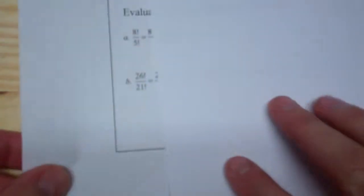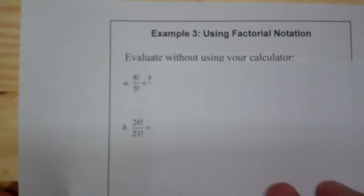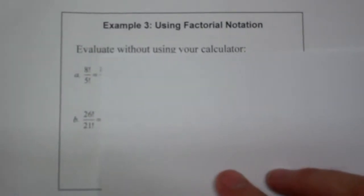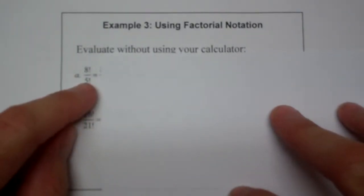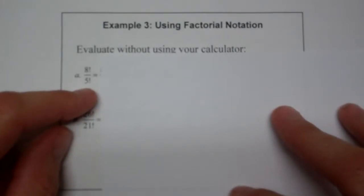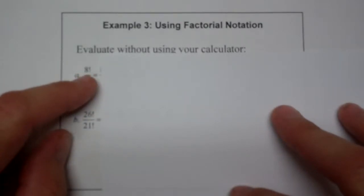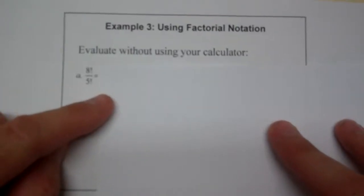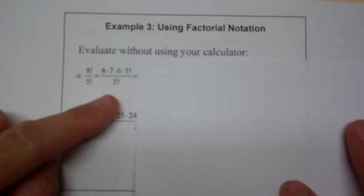Now that brings us to some use with the factorial notation. This is going to be really helpful. Sorry, I forgot to delete it. This is going to be really helpful in the future. Now your calculator can handle 8 factorial over 5 factorial, but there are some that it can't handle. So how would I simplify this?